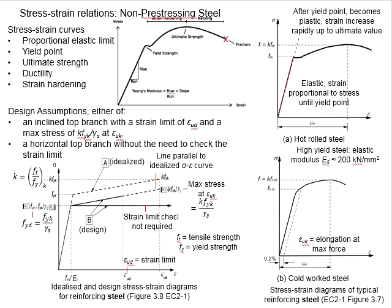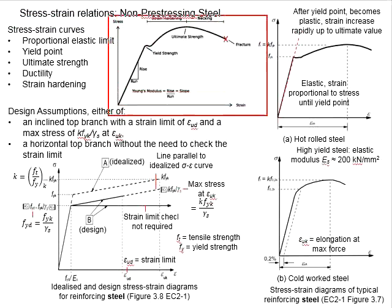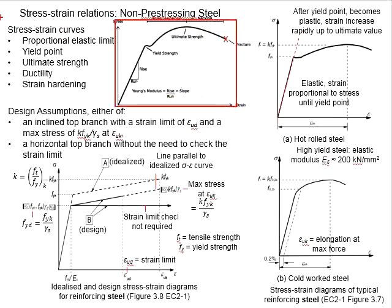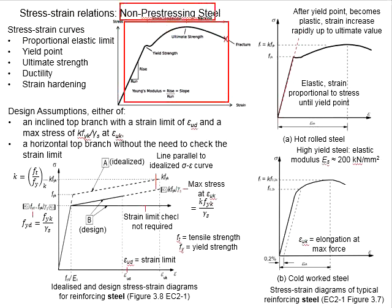Now let us look into the properties of the non-prestressing steel. The properties can be obtained from the stress-strain relationship as presented in the figure here. The y-axis represents the stress while the x-axis represents the strain. The stress is determined by dividing the force per cross-sectional area, while the strain is obtained from the elongation divided by the original length. The curve shown is a typical stress-strain curve for non-prestressing steel when subjected to an incremental tensile load.